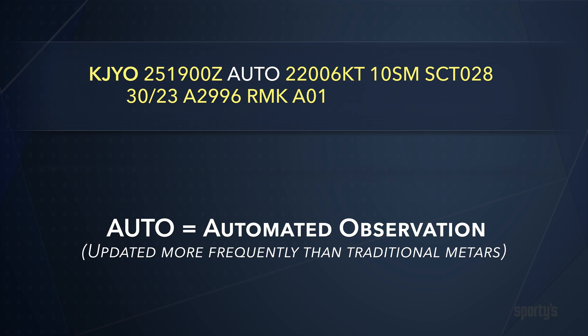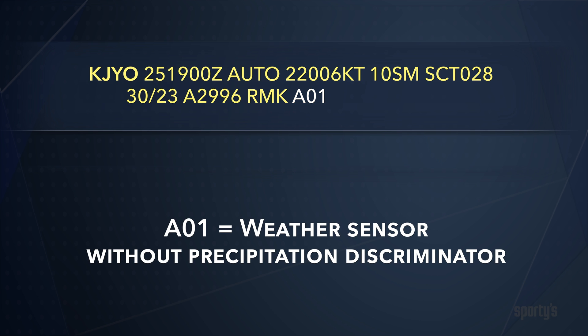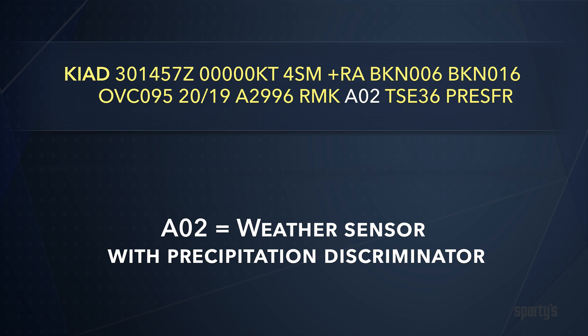METARs generated automatically from an AWOS are updated more frequently — as often as every 20 minutes. The remarks section may note the type of automated observation sensor used. An AO1 type sensor cannot discriminate between freezing and non-freezing precipitation. An AO2 type sensor can discriminate.